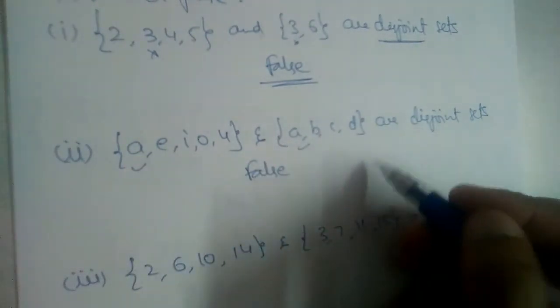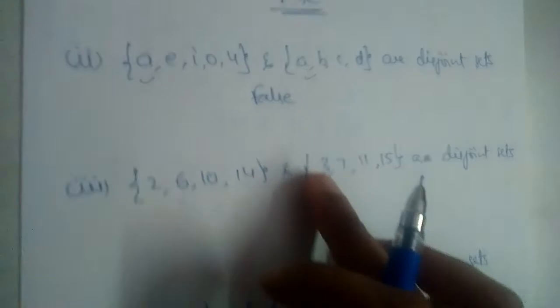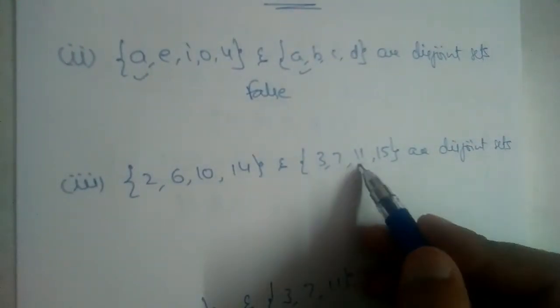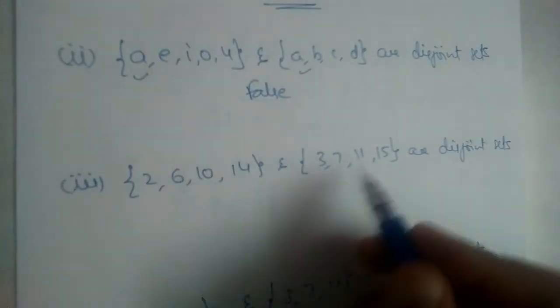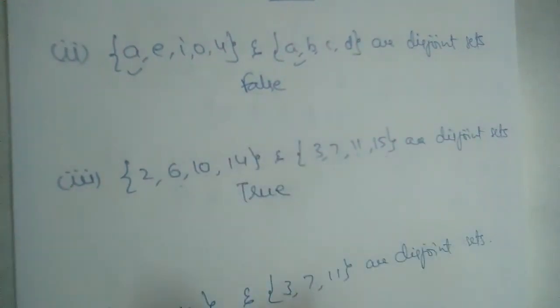Now, {2, 6, 10, 14} and {3, 7, 11, 15}—no element is common, right? So these two are disjoint sets, so it is true.